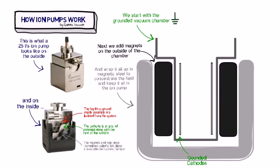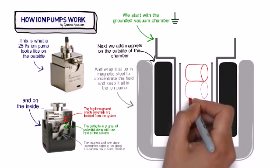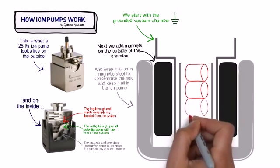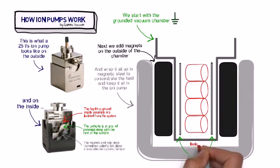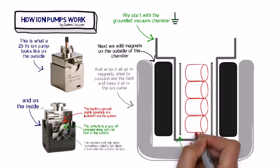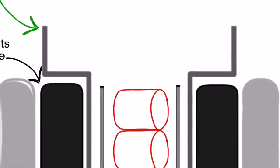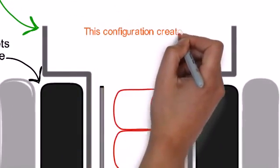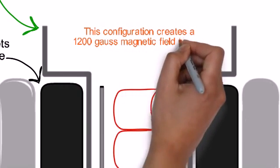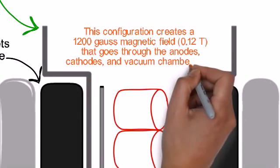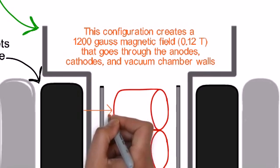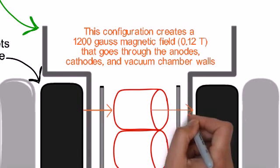And internal to that, we are actually going to start drawing our electrically isolated anode rings. And if we take a close look at this, you'll see that in this configuration, that strong magnetic field between those two magnets at about 0.12 Tesla goes through the anodes, cathodes, and the vacuum chamber walls. There it is.